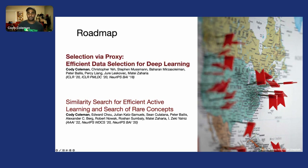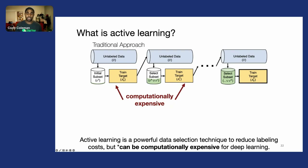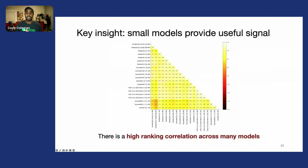Starting with Selection by Proxy and going back to the setup we discussed, it tries to address the computational expense associated with training large deep learning models at every iteration. The key insight we exploit is that small models can provide very useful signal for selecting data points.